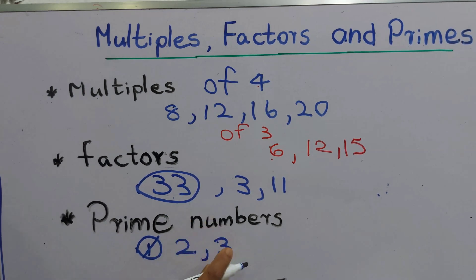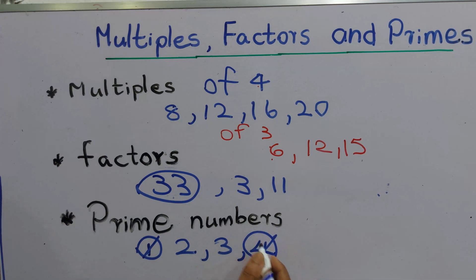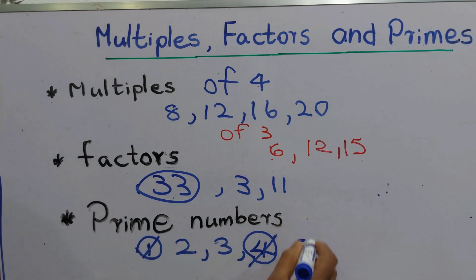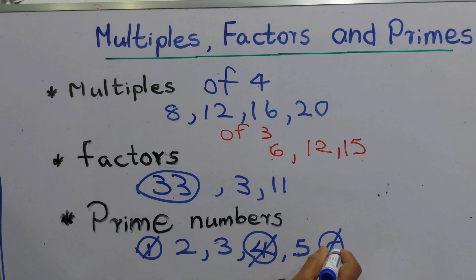3 is also a prime number — it can only be divided by itself and by 1. If we take 4, it is not a prime number because 4 can also be divided by 2. When it comes to 5, it is a prime number — it is only divisible by itself and by 1. 6 is not a prime number because it can be divided by 2 and 3.